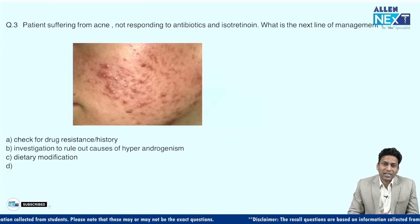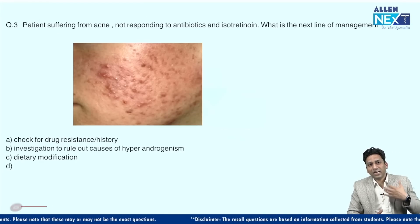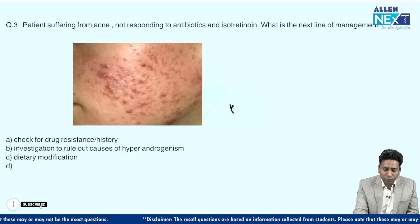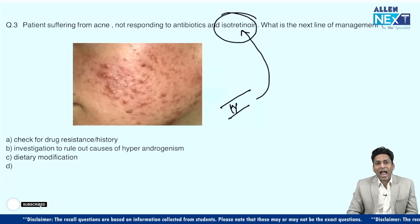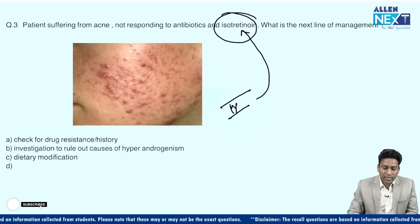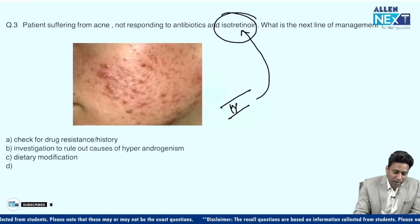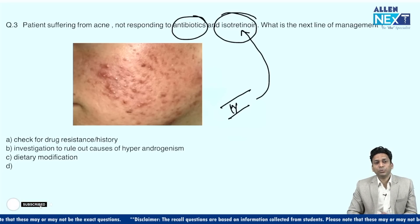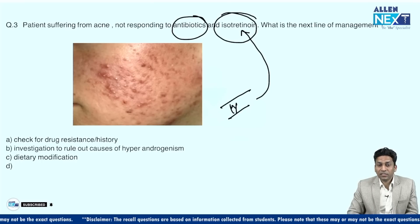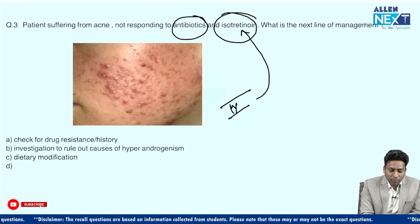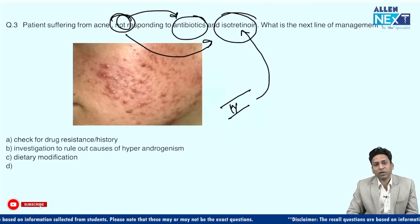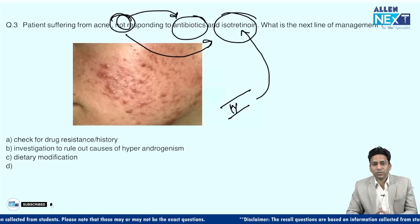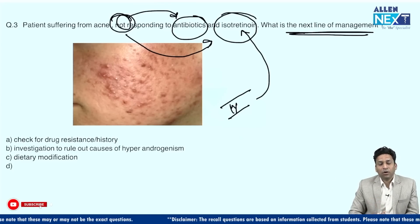Then there is a very common condition — acne. When acne becomes very severe, like grade 4 nodulocystic acne, the drug of choice is isotretinoin. There is also a role of bacteria, Propionibacterium acnes, which is why we use antibiotics. Both these are modalities used in treatment of acne. But the question says the patient is suffering from acne not responding to normal treatment like antibiotics or isotretinoin — what should you do next?